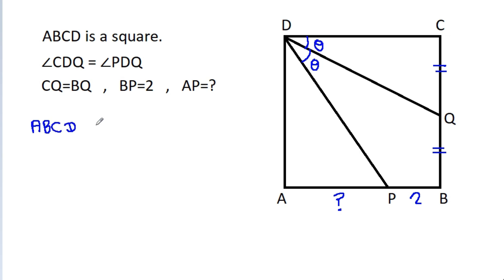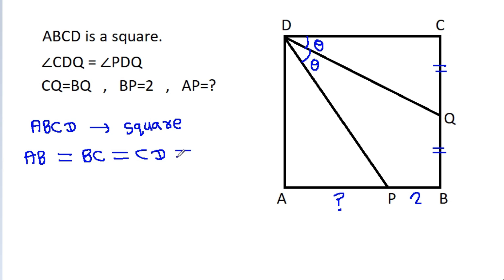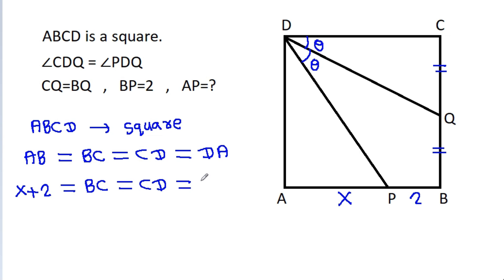ABCD is a square, that means AB is equal to BC, equal to CD, and equal to DA. Suppose AP is X, then AB will be X plus 2, which is equal to BC, equal to CD, equal to DA. So CD is X plus 2 and DA is X plus 2.